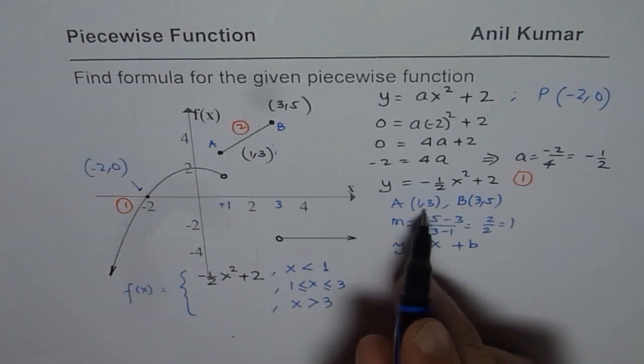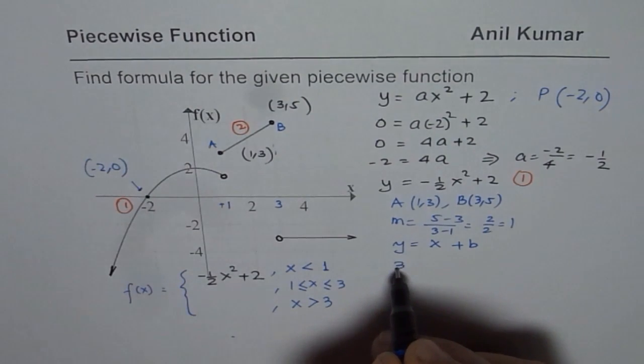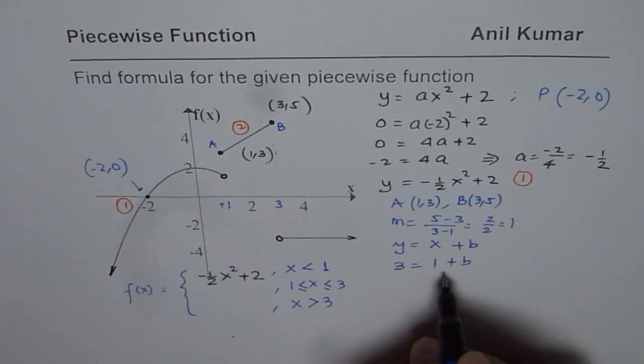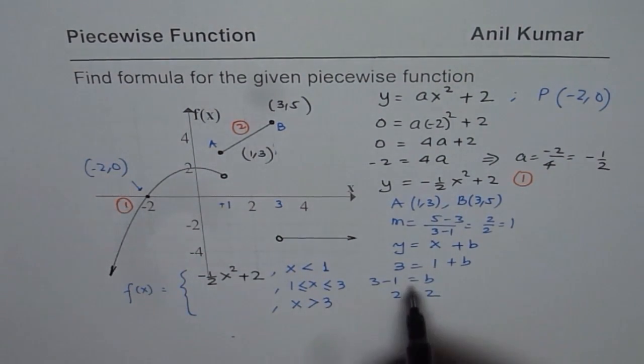To find the value of b, we will use one of the points. 1 and 3 is a good point to use. 3 is y value. 1 is x value plus b. Bringing 1 to this side. 3 minus 1 is b or b is equals to 2.